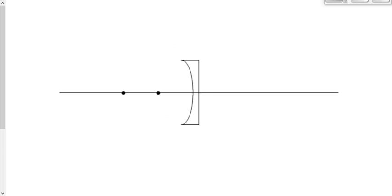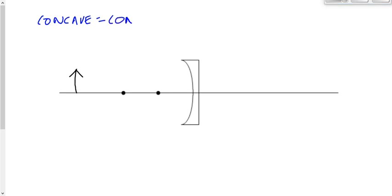What type of mirror is this? If we put our object over here on this side — it's concave, not convex. It's thinner in the middle than at the edges. As a mirror, concave means converging. If it were a lens, concave would be diverging, but as a mirror, concave means converging.